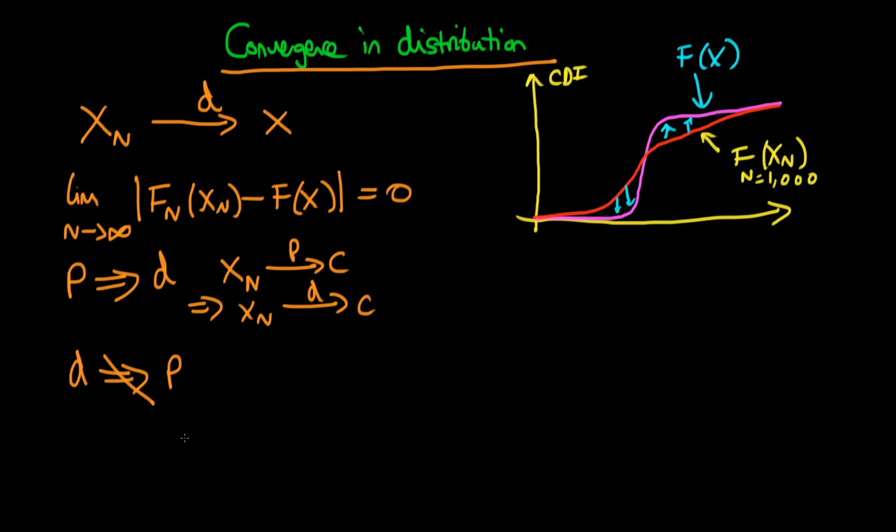To see this let's think about a particular example. So the example I'm going to give here is the case of a Bernoulli random variable where we have a probability of a half that X equals 0 and we have a probability of a half that X equals 1. So we've got a discrete random variable here.